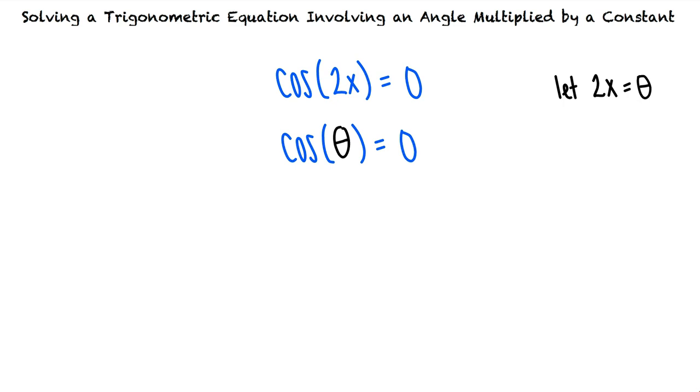The value zero is one of the common trigonometric values for cosine, so we know that if theta equals pi halves or 3 pi halves, cosine theta equals zero. This means we have the solution theta equals pi halves plus k pi, k element z, which takes into account all coterminal angles of pi halves and 3 pi halves.